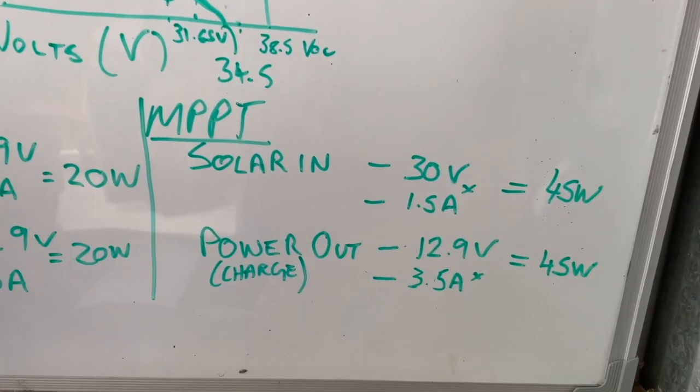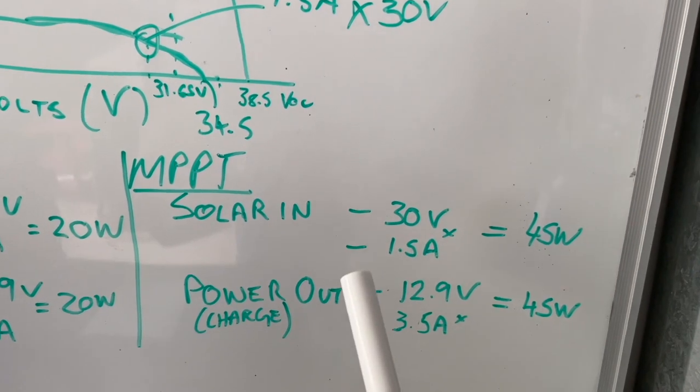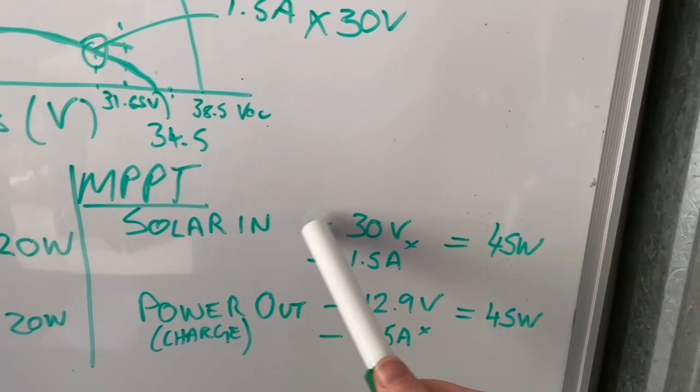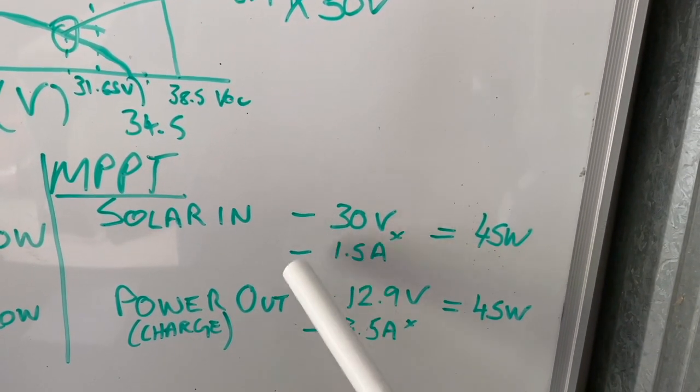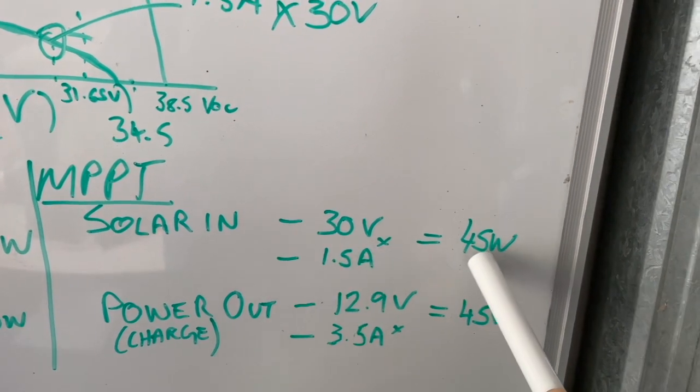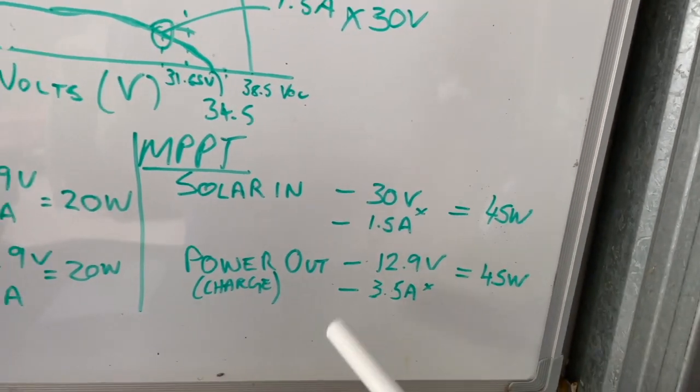This is something I prepared earlier. The numbers don't align to what we just saw, but we had solar coming in at 30 volts and 1.5 amps, equaling 45 watts. The controller was able to...